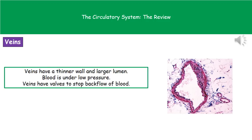The second blood vessel we need to look at are the veins. You can see in the diagram that they look very different to our arteries — they have a much thinner wall and a much larger space in the middle called the lumen. In veins, the blood flows at a much lower pressure, so they don't need that thick wall. However, because the blood is flowing at low pressure, they do need a structure called a valve. The function of the valves is to stop the back flow of blood.